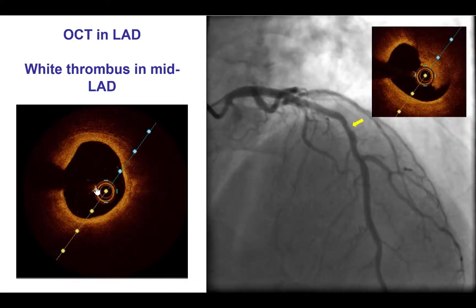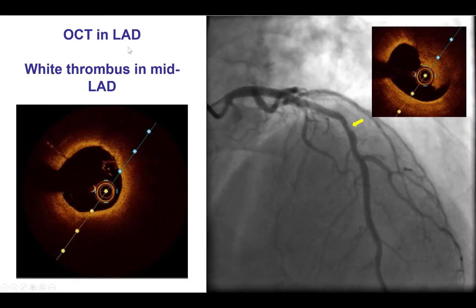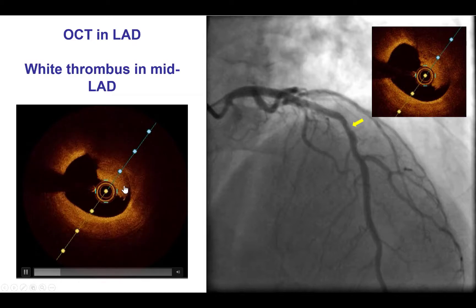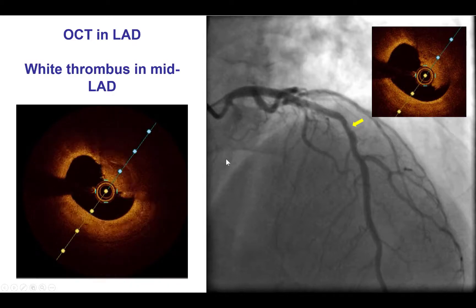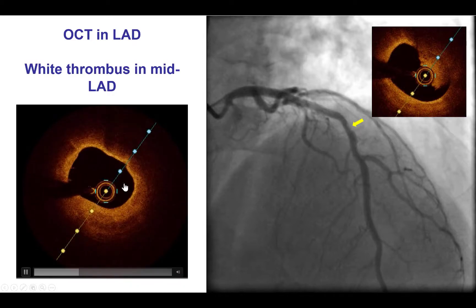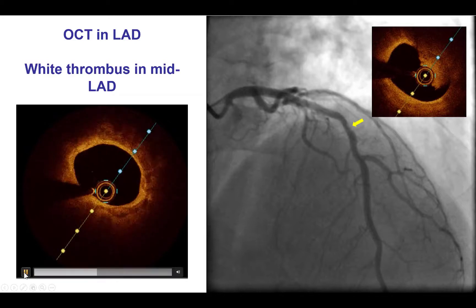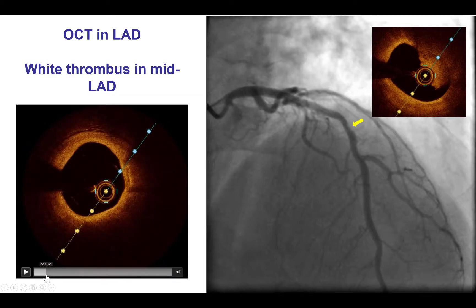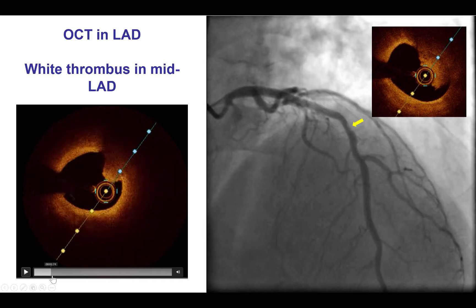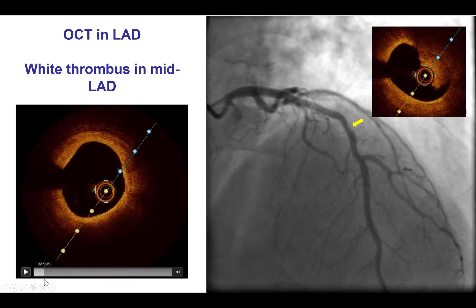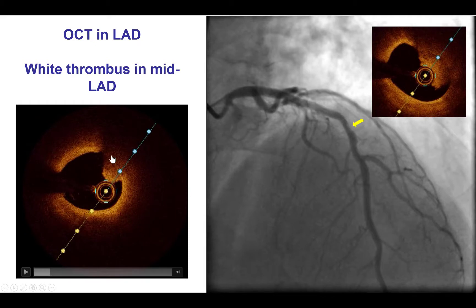We then went back to the LAD, and this time we did find in the middle LAD an area of ulceration with thrombus and a thin-cap fibroatheroma. So it's actually not a case of MINOCA, but instead the patient does have a thin-cap fibroatheroma with cap rupture and formation of thrombus.